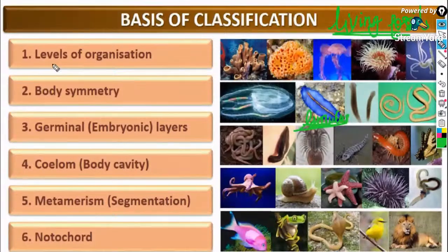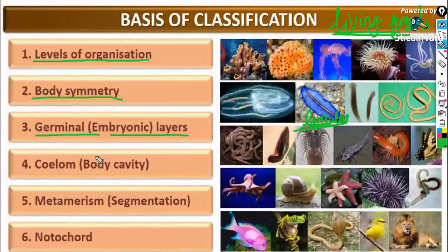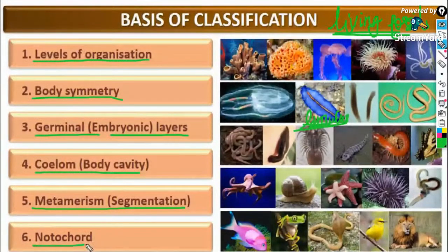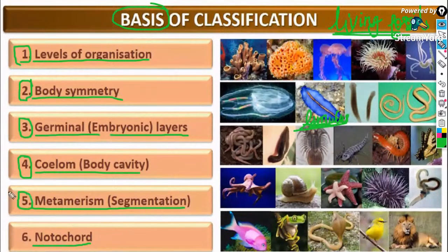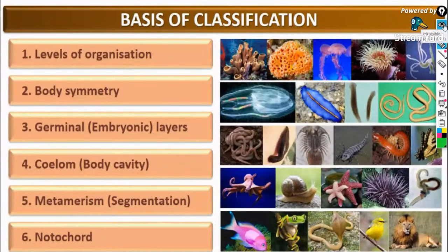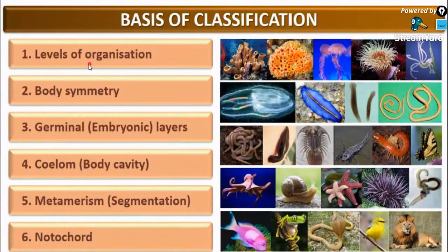The bases of classification in Animal Kingdom are: first, level of organization; second, body symmetry; third, germinal or embryonic layers; fourth, coelom or body cavity; fifth, metamerism or segmentation; and sixth, notochord. We will be discussing each of these one by one in today's class.